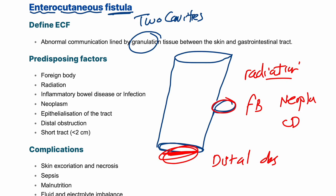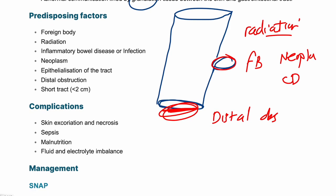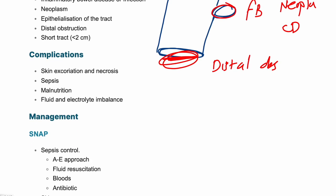A shorter tract of two centimeters can easily form a fistula. The complications of a fistula are something we have to deal with, treat, and be very protective about.